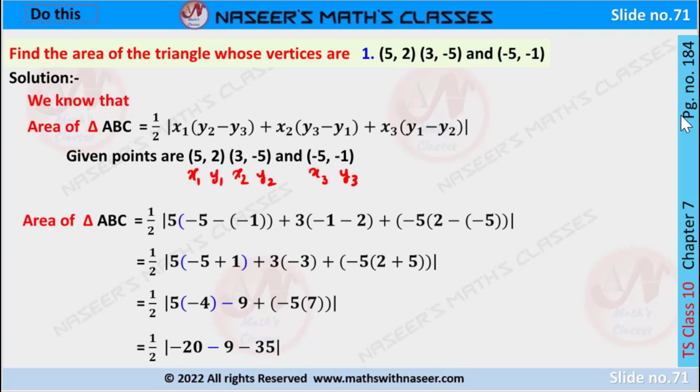Do this page number 184, Chapter 7, Coordinate Geometry. Find the area of the triangle whose vertices are (5, 2), (3, -5) and (-5, -1). We already know that area of triangle